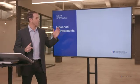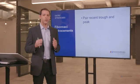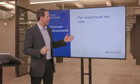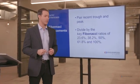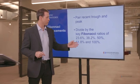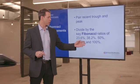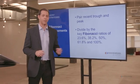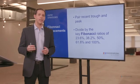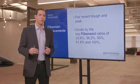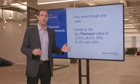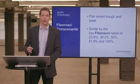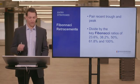What you do with Fibonacci retracements is you pair a recent trough and a peak. And you divide this distance by the key Fibonacci ratios of 23.6%, 38.2%, 50%, 61.8%, and 100%. These give you key levels of support. Now I'm going to show you how to draw these Fibonacci ratios, and let's go over some charts to outline that right now.